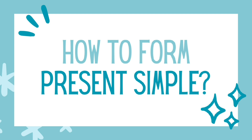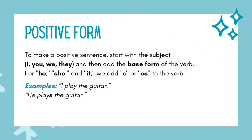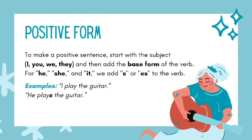How to form present simple? Positive form: To make a positive sentence, start with the subject — I, you, we, they — and then add the base form of the verb. For he, she, and it, we add S or ES to the verb. Example: I play the guitar. He plays the guitar.